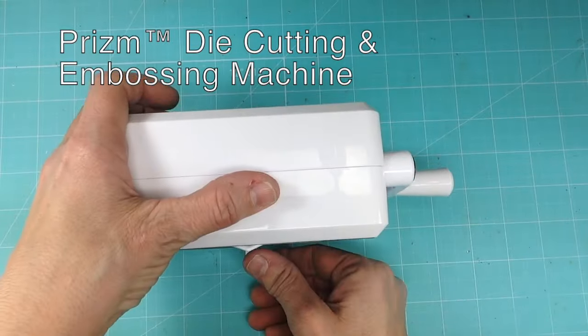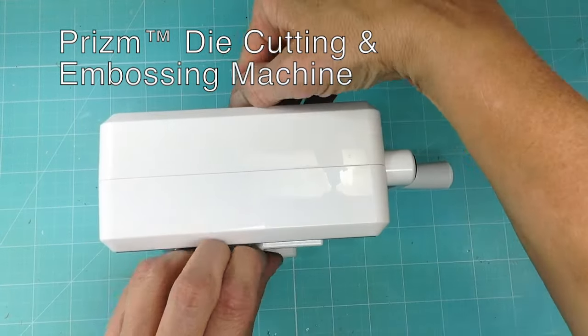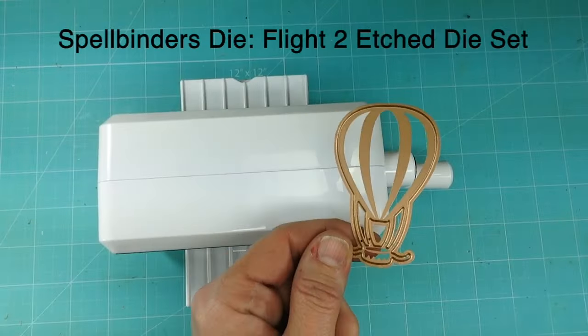The prism is super easy to use. Lock it in place on your table, fold the arms down, and you're ready to start die cutting some hot air balloons.